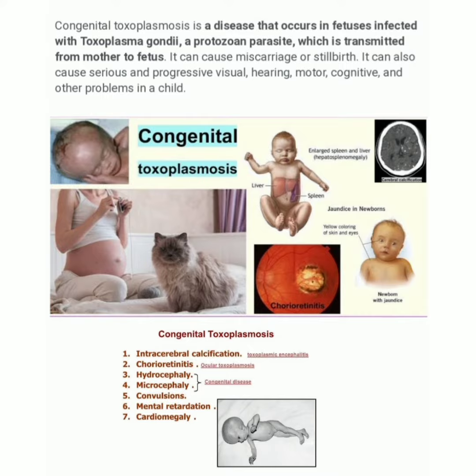Further features include intracerebral calcifications (toxoplasmic encephalitis), chorioretinitis (ocular toxoplasmosis), hydrocephaly or microcephaly, convulsions, mental irritability, and cardiomegaly. This is all about congenital toxoplasmosis — please do subscribe and share.